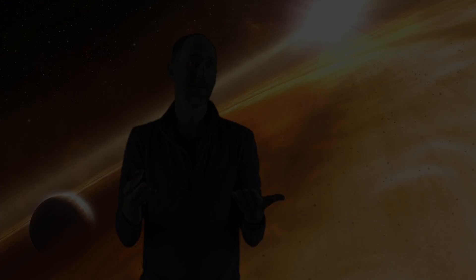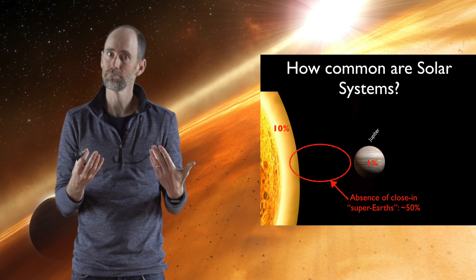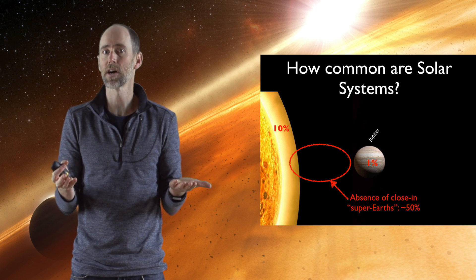Now finally there's one more thing that we can look at, and that's not what the solar system has, something it doesn't have. About half of stars like the Sun have close-in super-Earths, and we don't. That's about a 50% shot right there.